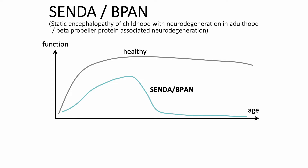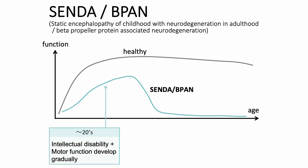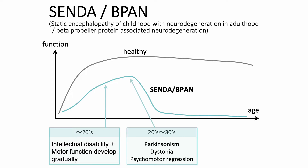BPAN is a neurodegenerative disease with a characteristic clinical course. It begins at early childhood with psychomotor retardation, which remains static until adulthood. Then, in the 20s to early 30s, affected individuals develop sudden onset progressive dystonia, Parkinsonism, and dementia.